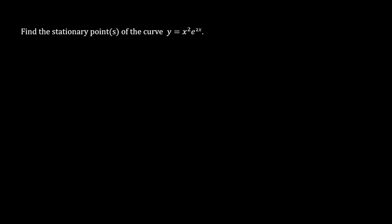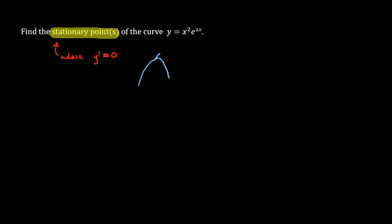What is a stationary point again? Let's review that from the previous chapter. A stationary point is a place where dy/dx is equal to 0, because it's where the gradient is 0. In other words, it is either a maximum point or a minimum point.